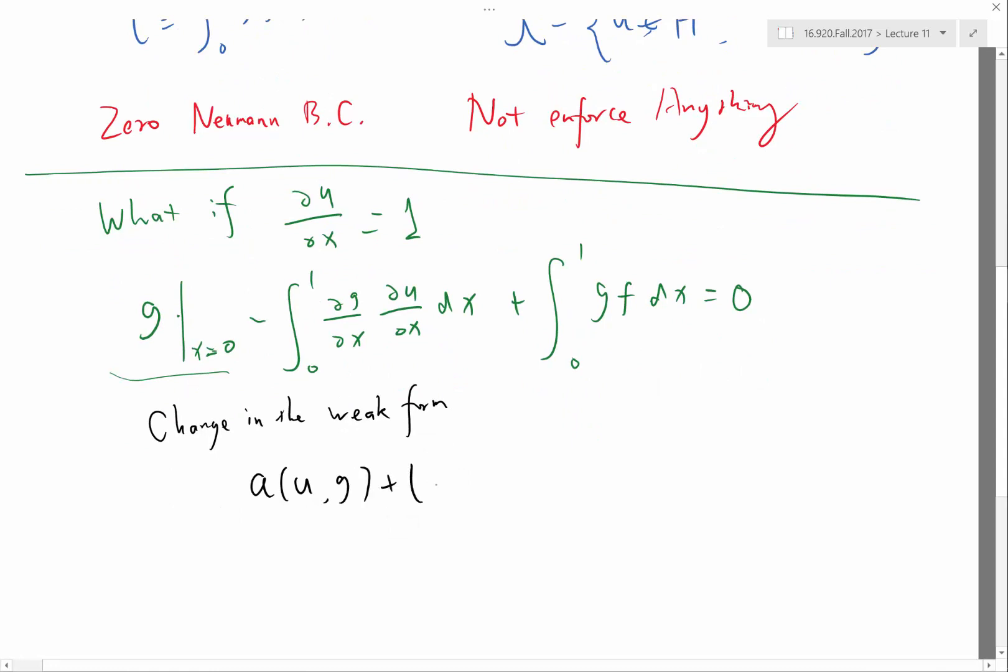a of u,g plus l,g is equal to 0. It cannot stick to the same a and l. So, can somebody tell me does a change or l change? Or both?